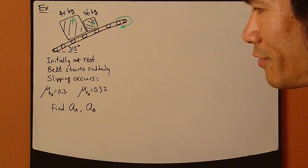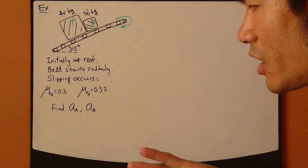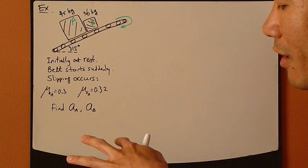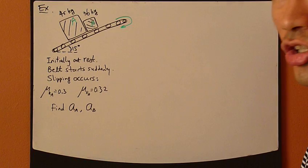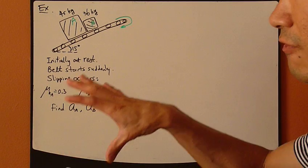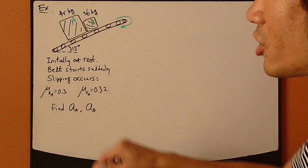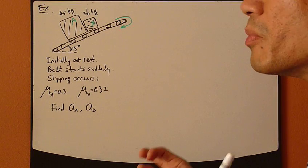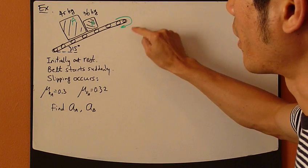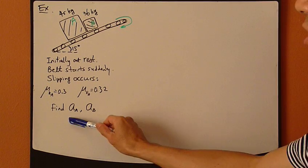Obviously, from experience, you would think that after a while, a short while later, these boxes would catch the conveyor belt, and then they won't slip anymore, and so they will stay with the conveyor belt. So now we're concerned with just the initial few moments when this belt is started suddenly. What are the accelerations of A and B?